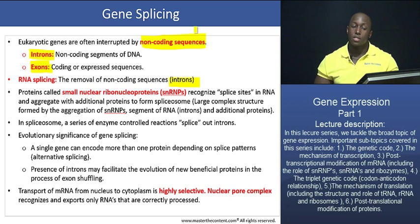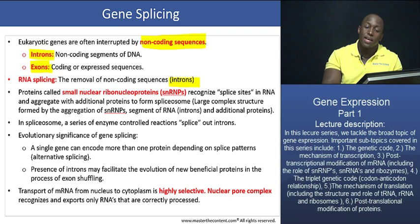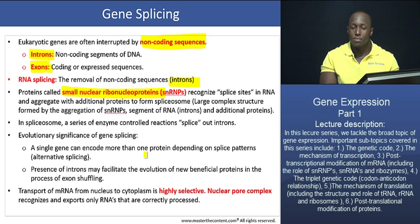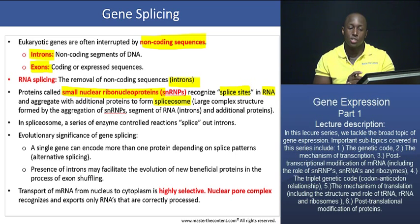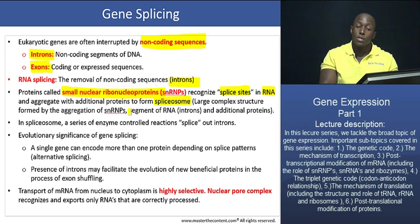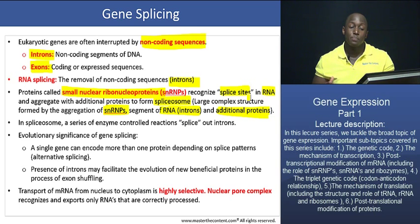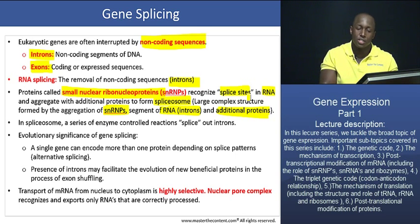How does gene splicing actually occur? We have proteins called SNRNPs — small nuclear ribonuclear proteins. What these proteins do is recognize splice sites in RNA, and they aggregate with additional proteins to form what is called a spliceosome. A spliceosome is a large complex structure formed by the aggregation of small nuclear ribonuclear proteins, the actual segment of RNA to be processed (the intron), as well as other additional proteins such as ribozymes and small nuclear ribonucleic acid, all of which are involved in the process.